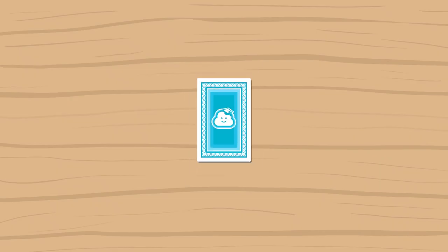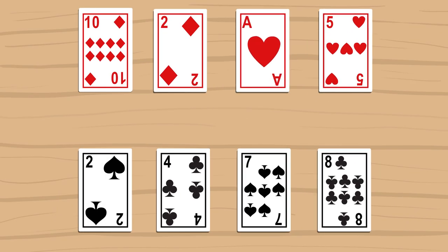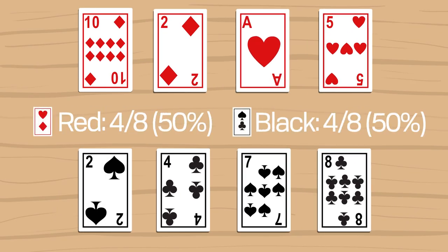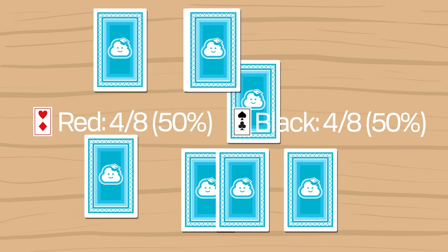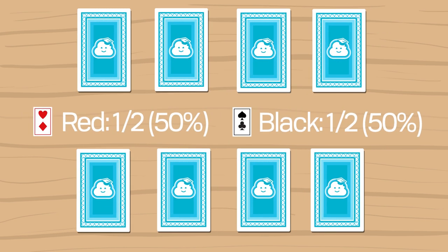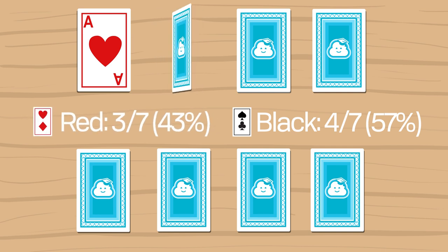However, not all events are independent. Drawing a card from this deck will have a 4 out of 8, or 1 over 2, chance of being red. The probability of drawing a second red card has changed, because one was taken away. The probability is now 3 over 7.